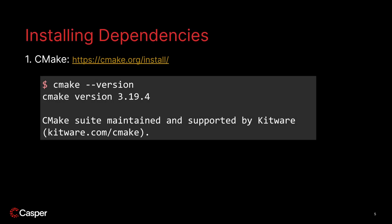Next we're going to start installing the necessary dependencies. CMake is a popular build tool that we will utilize. You may very well have it already installed on your computer. If you do, make sure that you have the latest version — currently it's 3.19.4. If you need to install or upgrade it, follow the steps located at cmake.org/install. Once installed, check your version as shown and it should resemble the expected output.